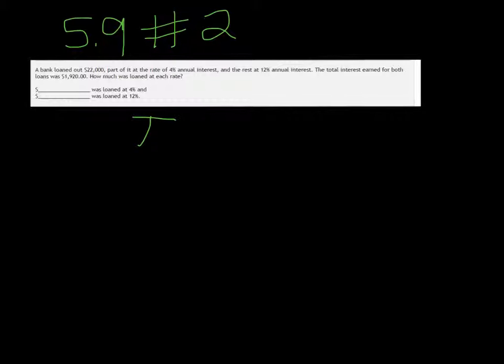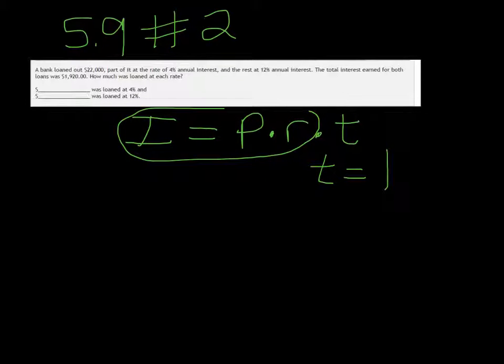All right, so this is definitely an interest problem, so remember I equals P times R times T. In this example, it's annual interest, meaning T is equal to 1. So actually, we don't have to worry about the T part. We're just going to concentrate on the I equals PR.